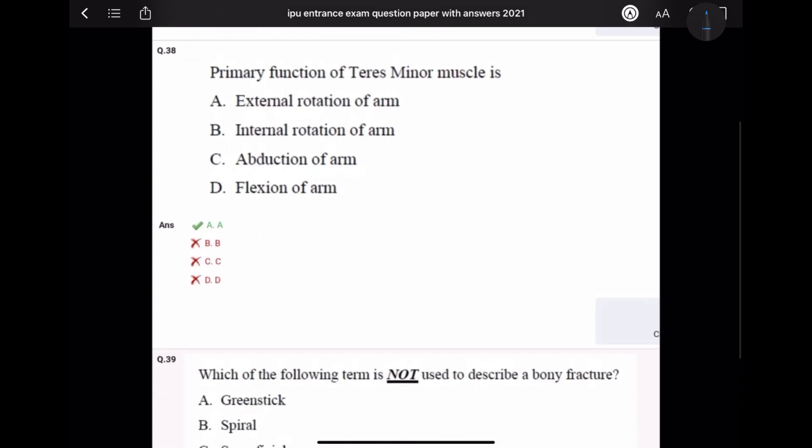Question 38: Primary function of teres minor muscle is external rotation of arm. It helps with infraspinatus.